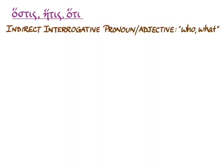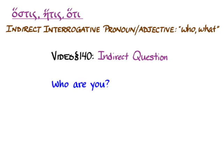Now, ὅστις, ἥτις, ὅ τι is also the indirect interrogative pronoun or adjective, and it means who or what there. And we're really not going to learn how to use it until we get to section 140, which is indirect question. But let me give you a quick example here. We can say the direct question, 'Who are you,' with the direct interrogative τίς εἶ.